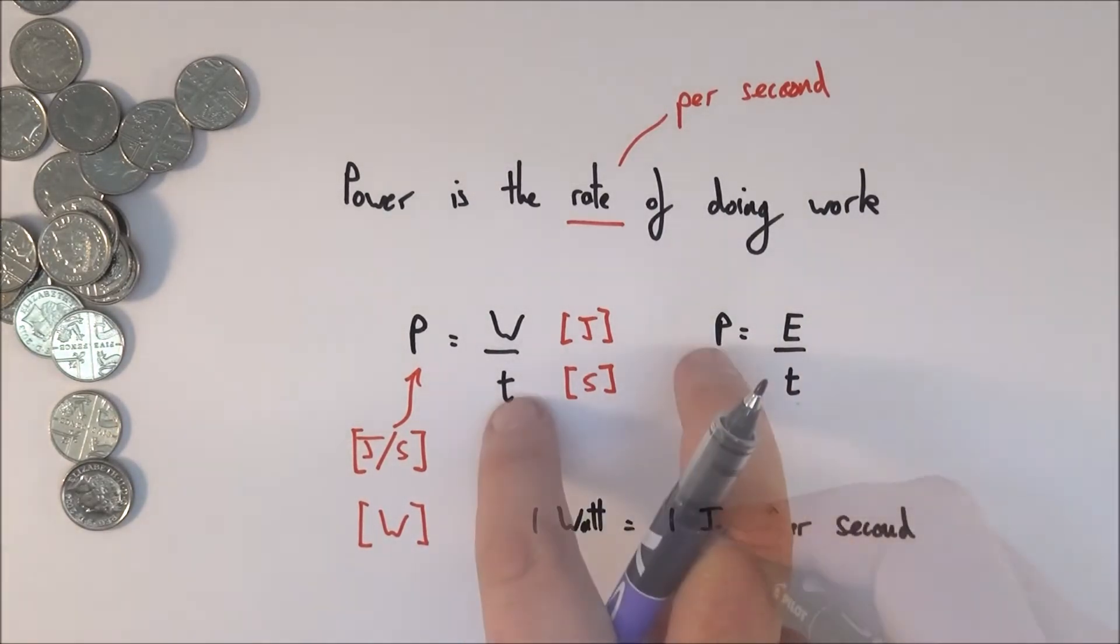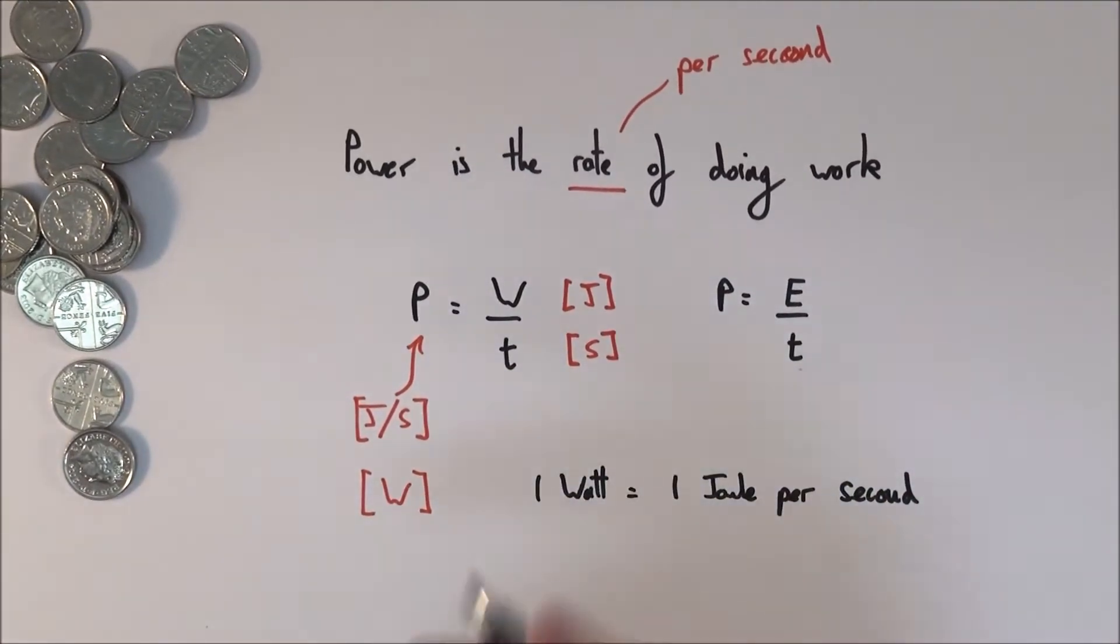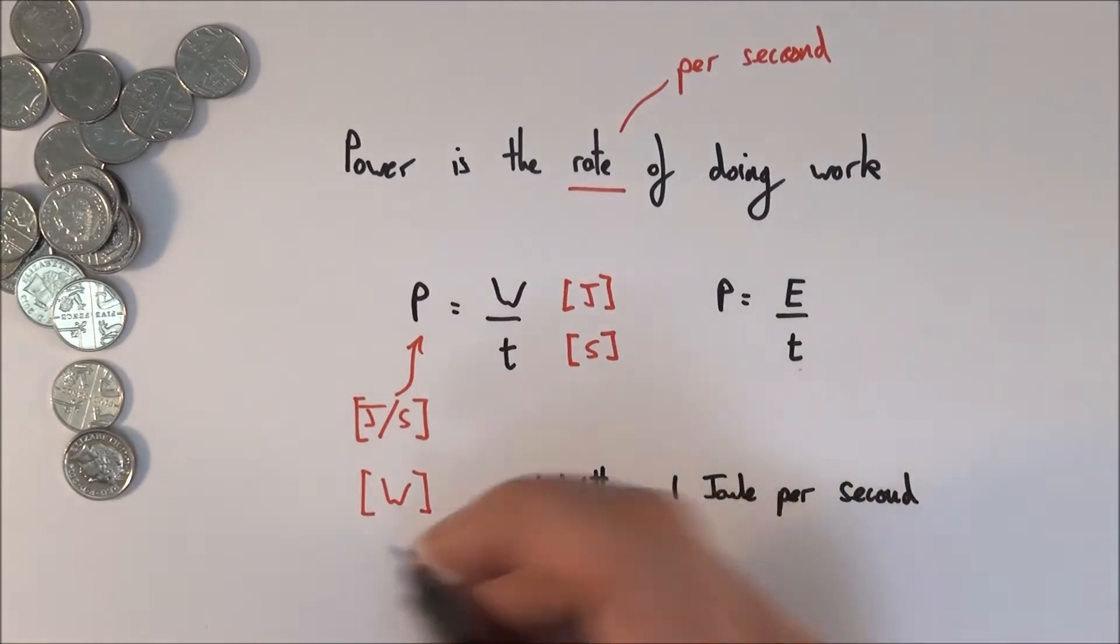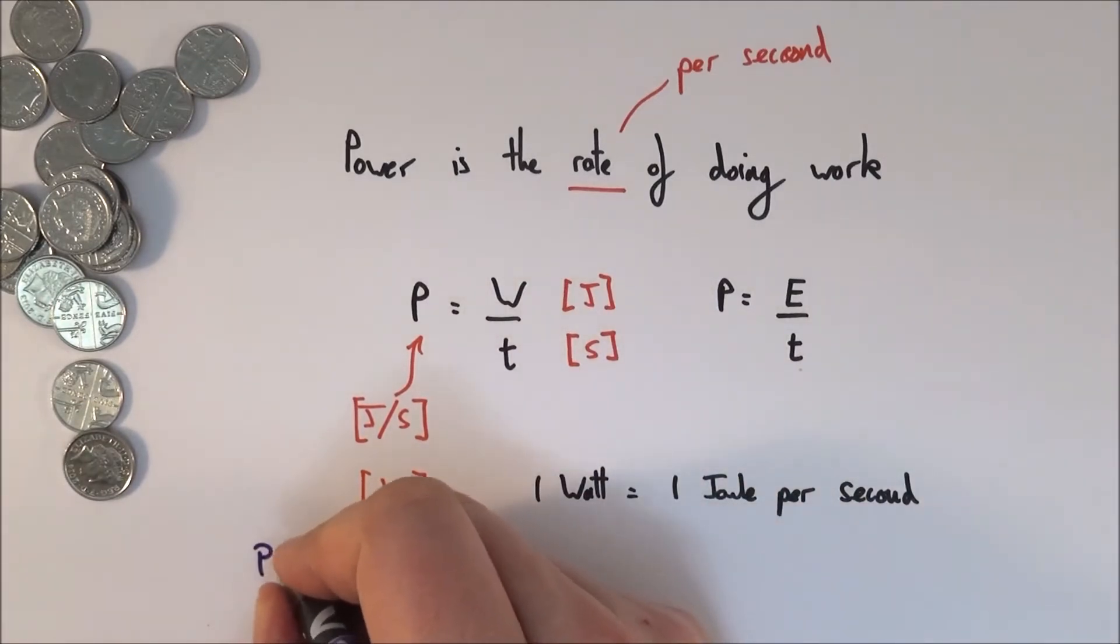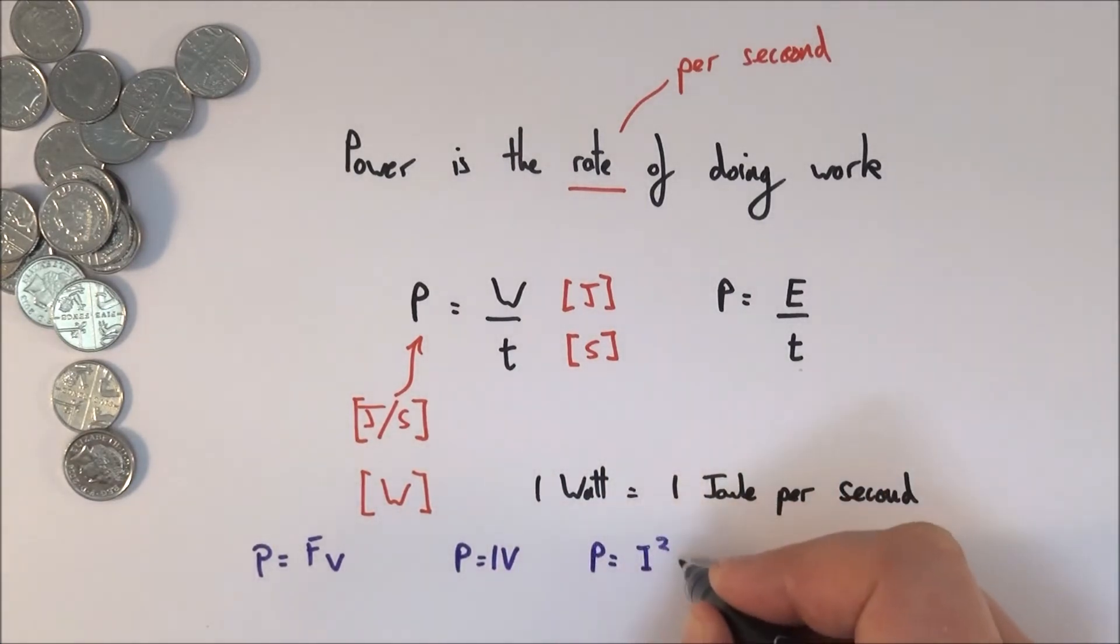These equations here are the main ways that we can work out the power which is transferred, but there are a few more that you might want to be aware of. We can also say that power is equal to force times velocity. If we think about electrical power, we can say that electrical power is equal to current times potential difference, or power equals I squared R, so the current squared times resistance, or even power equals V squared over R.